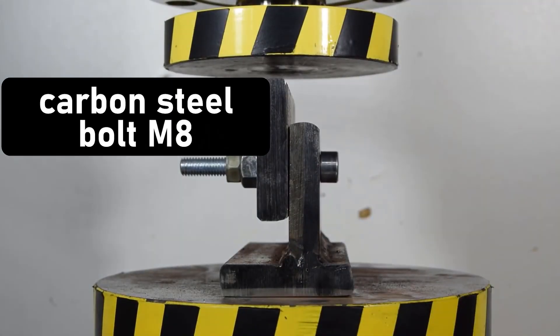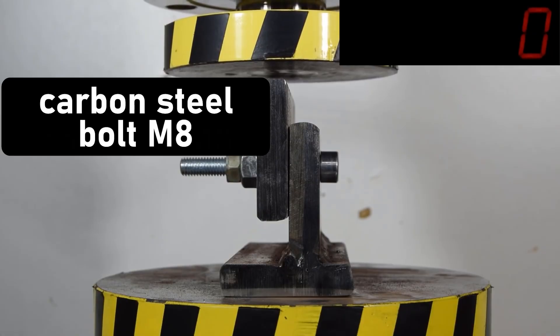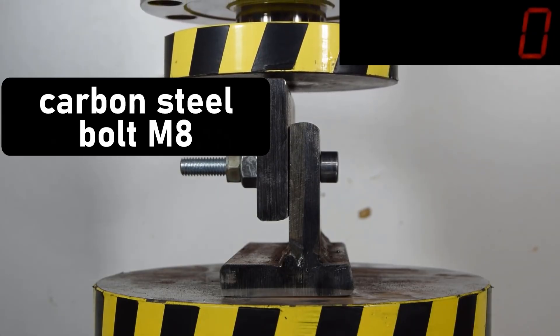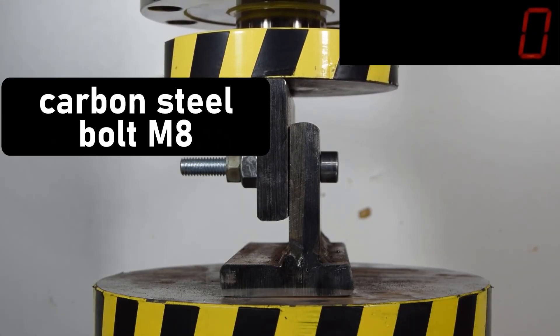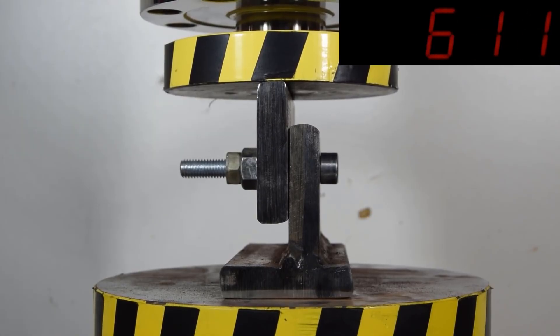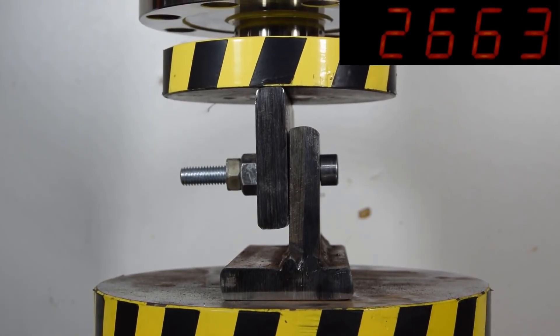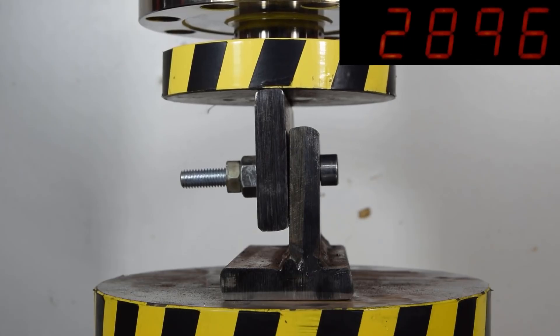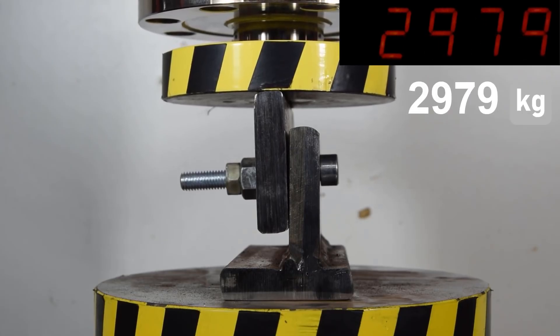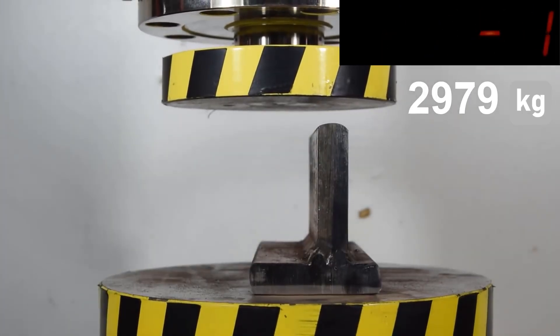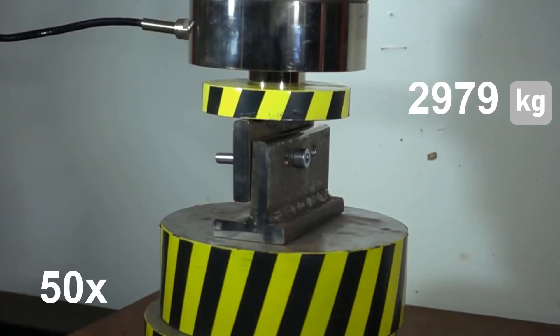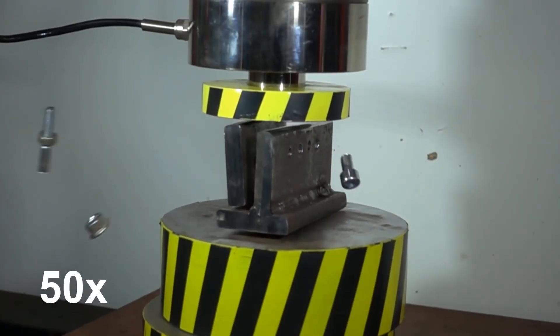For comparison, let's also test two larger diameter M8 bolts for shearing. One bolt made of ordinary carbon steel, and another one is made of titanium. So, first up is the bolt made of carbon steel. The steel M8 bolt withstood shearing of almost 3 tons.